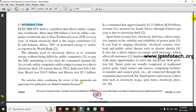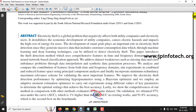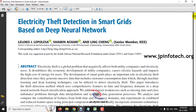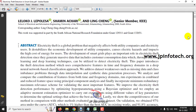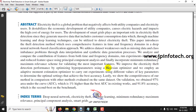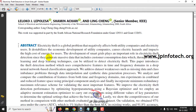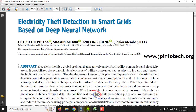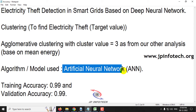For identifying electricity theft, there are various existing methods but they have some disadvantages. To overcome those issues, a machine learning and deep learning based approach is being implemented. In this paper, the authors implemented a deep neural network using a Bayesian optimizer and an adaptive moment estimation optimizer, with different values of key parameters.